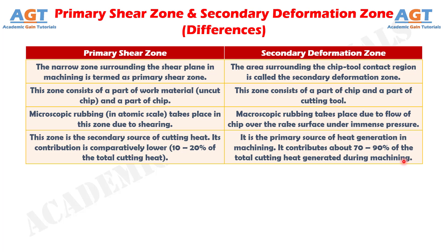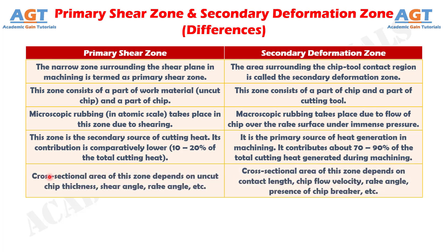Difference Number 5: Cross-sectional area of the primary shear zone depends on uncut chip thickness, shear angle, rake angle, etc., whereas cross-sectional area of the secondary deformation zone depends on contact length, chip flow velocity, rake angle, presence of chip breaker, etc.